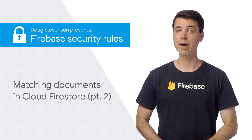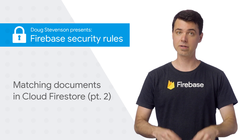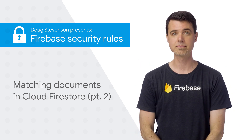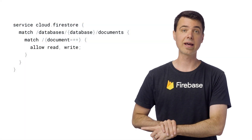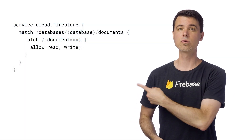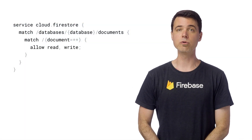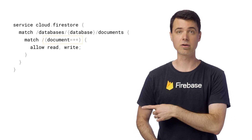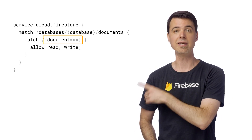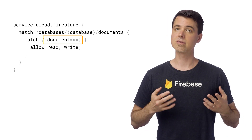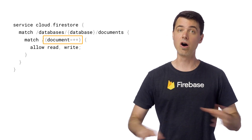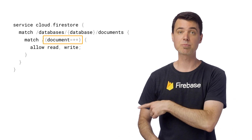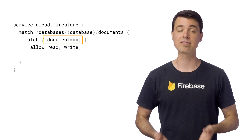There's still more to know about matching documents, and in particular, how to use a special kind of wildcard, which I will call a glob wildcard. At the end of the last video, I left you with this rule right here — the default rules when you create your database in test mode. Notice the wildcard in curly braces with the document equals star star. This glob wildcard is actually matching all of the documents in the entire database, and the allow expression is granting full read and write access to everyone.